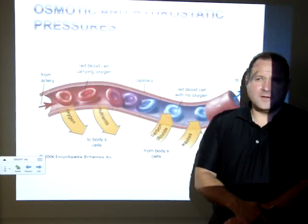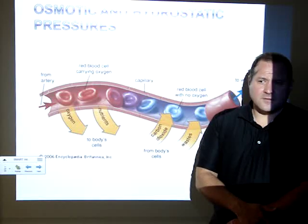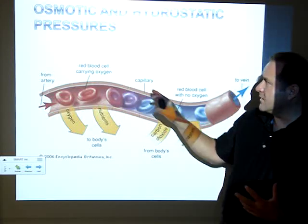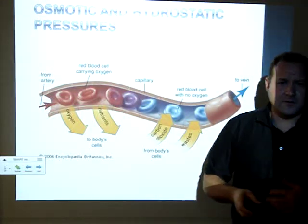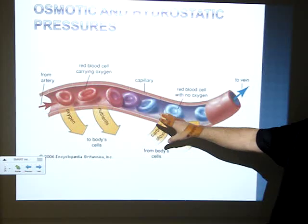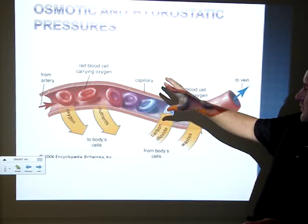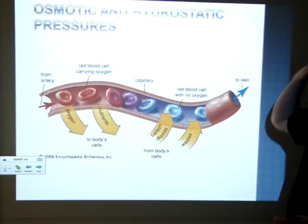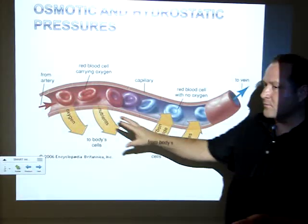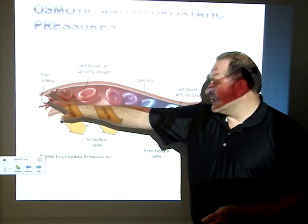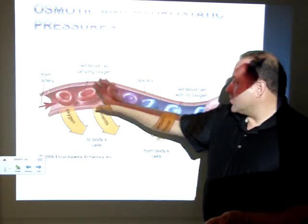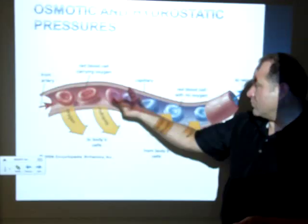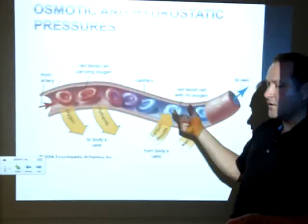When talking about edema and flow of water, we have to get into osmotic and hydrostatic pressures. I want you to keep this picture in your head as we go through the whole part about fluids. This is an artery turning into a vein at the capillary level — where only one red blood cell can get through at a time.